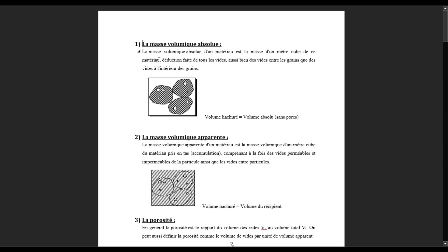Alors, la masse volumique absolue des matériaux est la masse d'un mètre cube de ce matériau, déduction faite de tous les vides — aussi bien des vides entre les grains que les vides intérieurs des grains. Donc le schéma le montre. La masse volumique absolue, c'est simplement la matière solide après déduction de tous les vides, que vous voyez à l'extérieur ou à l'intérieur.